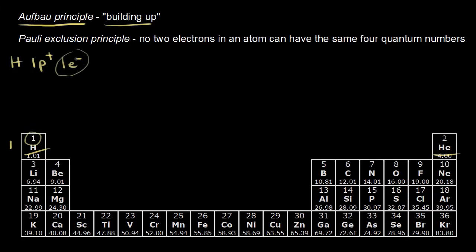We want to put that electron as close to the nucleus as possible in order to maximize the attractive force between the positive charge and the negative charge. So the electron goes into the lowest energy level possible, and that's when n is equal to one. If n equals one, there's only one allowed value for l, equal to zero. And if l equals zero, there's only one allowed value for ml, the magnetic quantum number — that's also equal to zero.